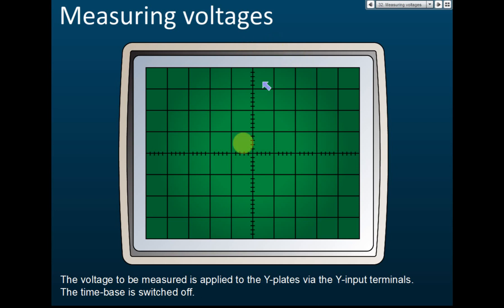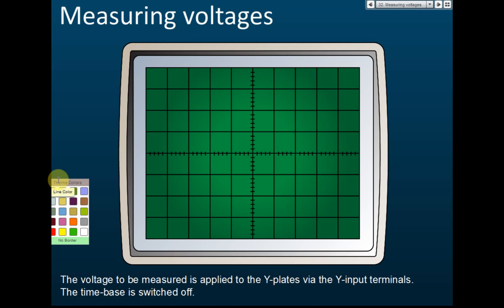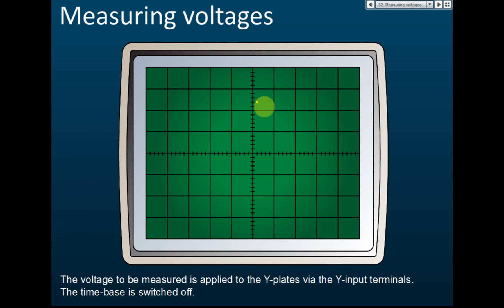To measure voltage using a CRO, the voltage to be measured is applied to the Y plates via the Y input terminal. The time base is switched off. For measuring direct current, when you plug in the input at the Y terminal you get a bright spot on the screen. With the time base off and Y gain set to 5 volts per division, the spot appears at a certain position.